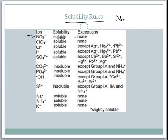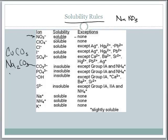Sodium nitrate would be soluble. On the other hand, something like copper(II) carbonate — carbonate compounds are insoluble, with exceptions being group 1A and ammonia compounds. So copper carbonate would be insoluble, but sodium carbonate, since it is a group 1 metal carbonate, would be soluble. We'll discuss this more when we do examples.